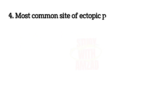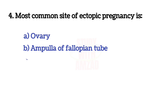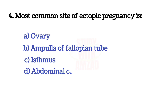Most common site of ectopic pregnancy is? The correct answer is B: Ampulla of the fallopian tube.